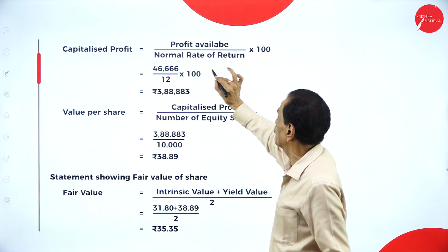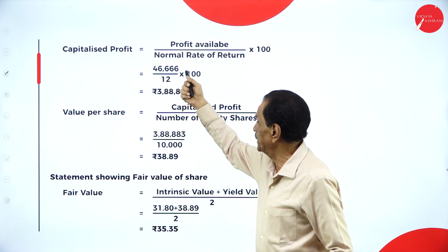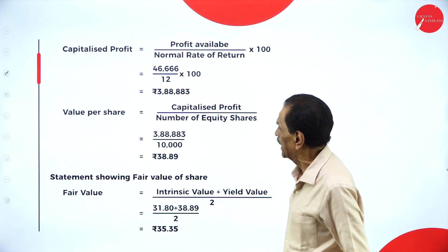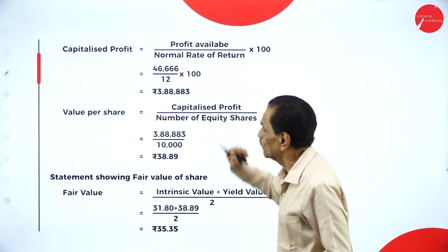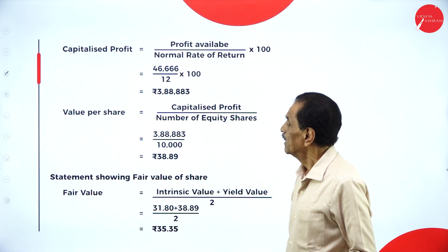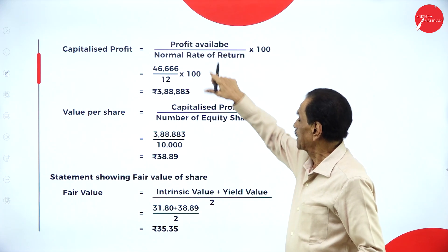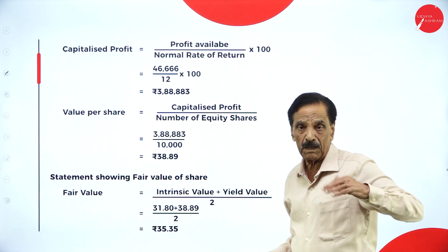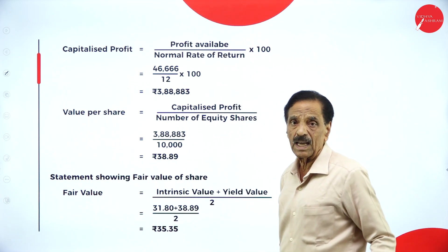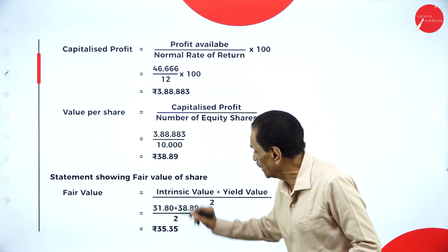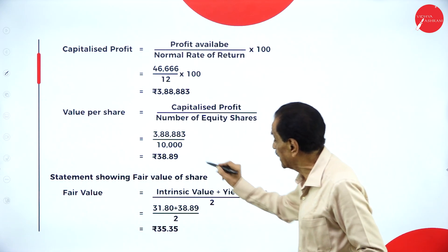Now capitalize the profit. Capitalization of profit equals profit available divided by normal rate of return, multiplied by one hundred. Profit available is forty-six thousand six hundred sixty-six divided by twelve, multiplied by one hundred, which gives three lakh eighty-eight thousand eight hundred eighty-three. Value of each share equals capitalized profit divided by number of equity shares: three lakh eighty-eight thousand eight hundred eighty-three divided by ten thousand, which works out to rupees 38.89 per share under the yield method.